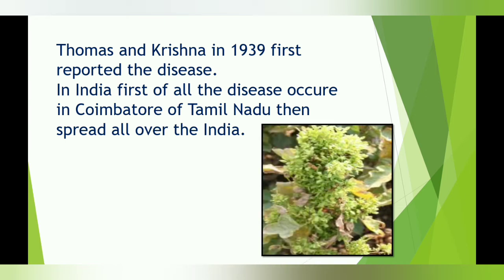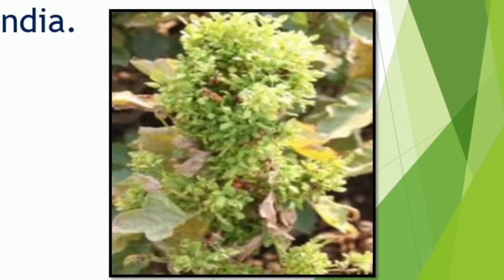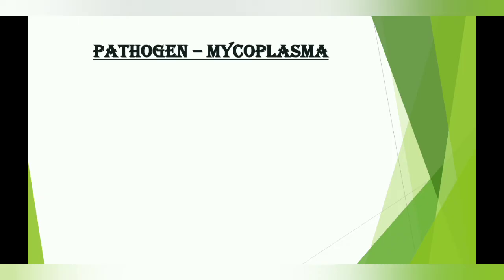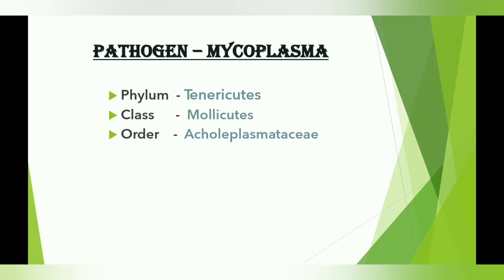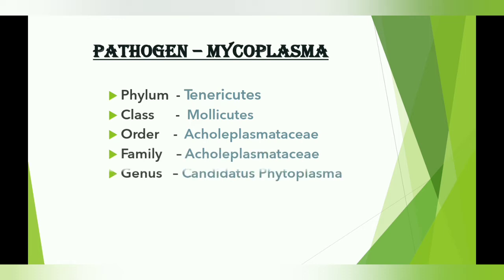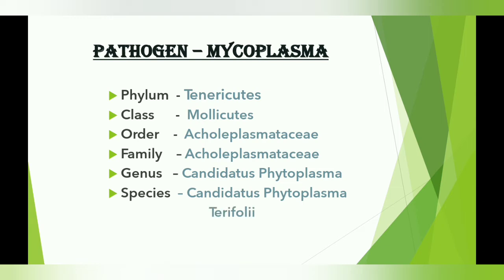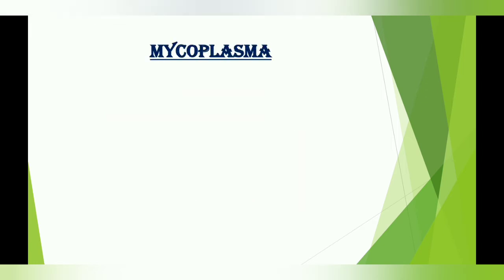Thomas and Krishna in 1939 first reported the disease in India. The disease first occurred in Coimbatore, Tamil Nadu, and then spread all over India. This is the picture of the diseased plant — the leaf becomes very short and the plant shows a bushy appearance. Let's first know about the pathogen Mycoplasma: Phylum Tenericutes, Class Mollicutes, Order Acholeplasmatales, Family Acholeplasmataceae, Genus Candidatus Phytoplasma, Species Candidatus Phytoplasma trifolii.